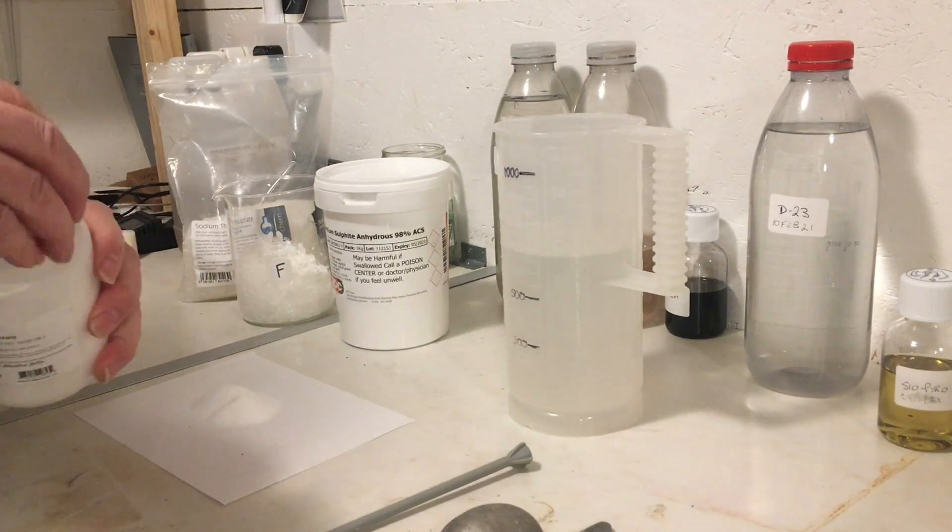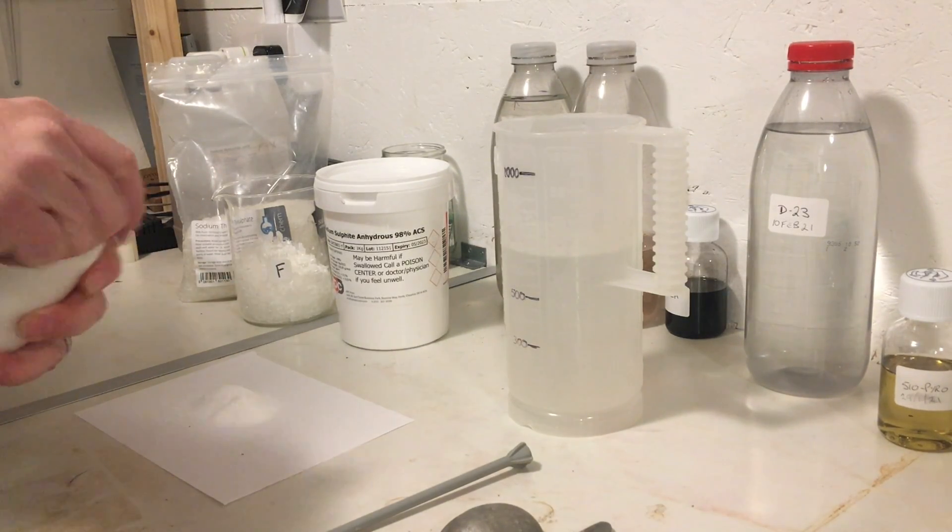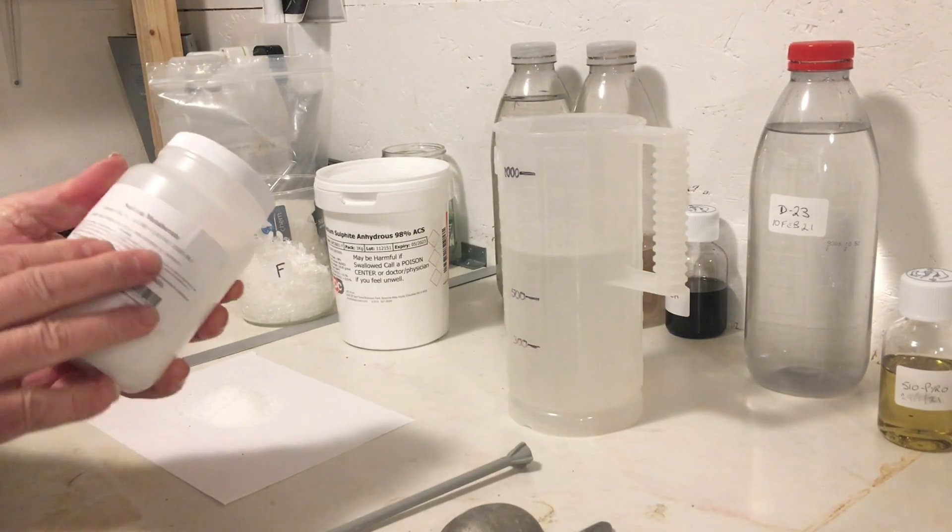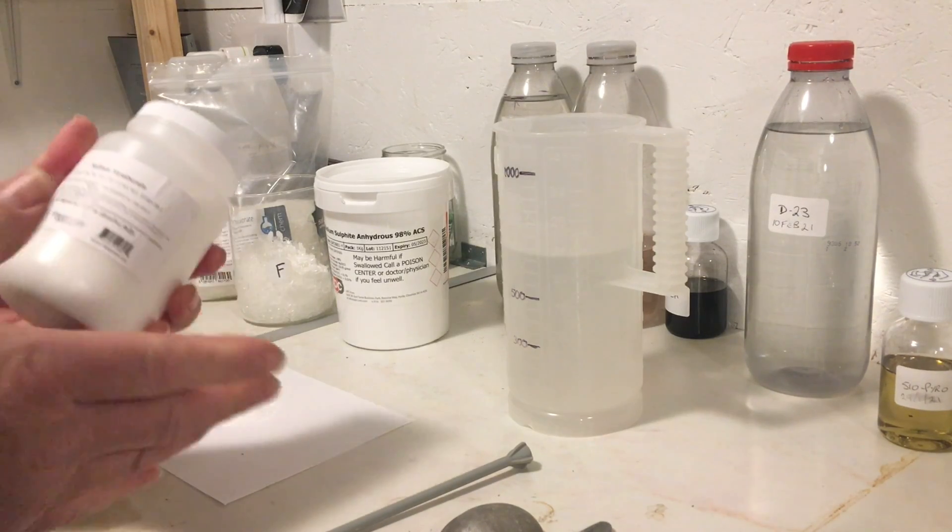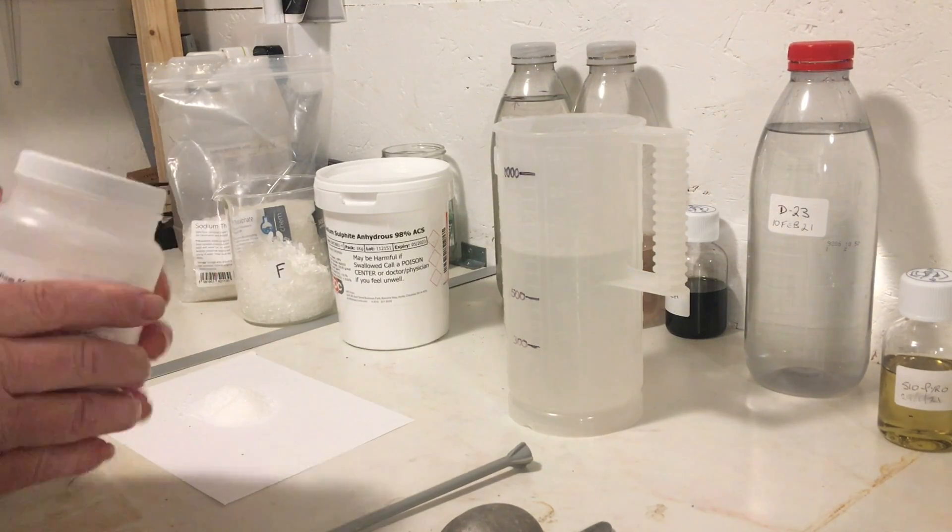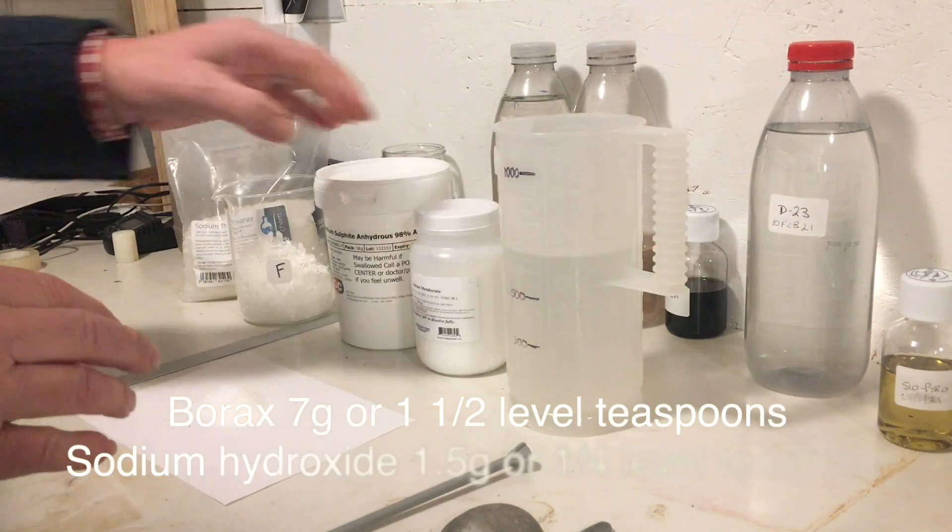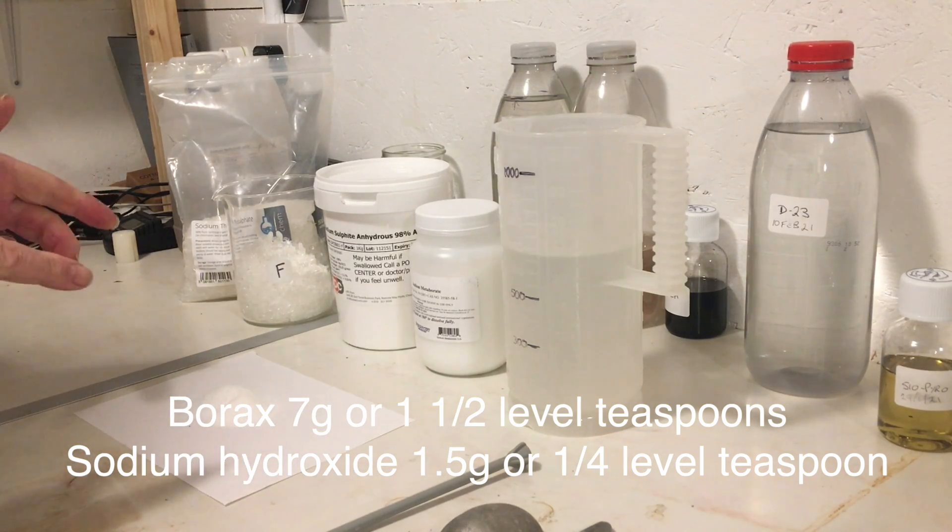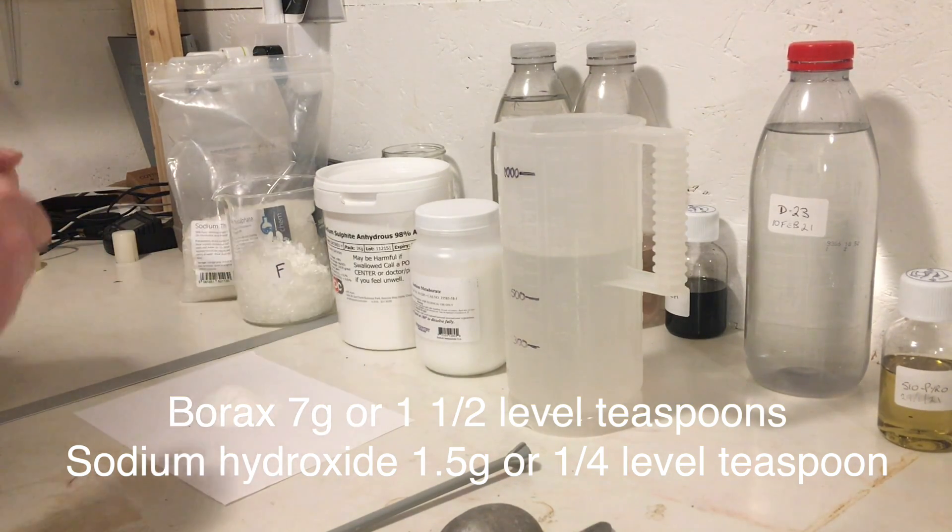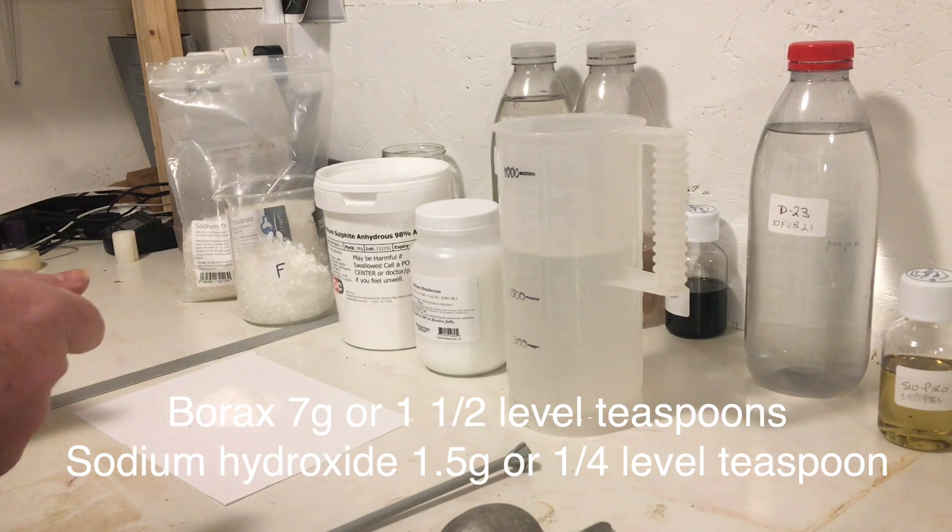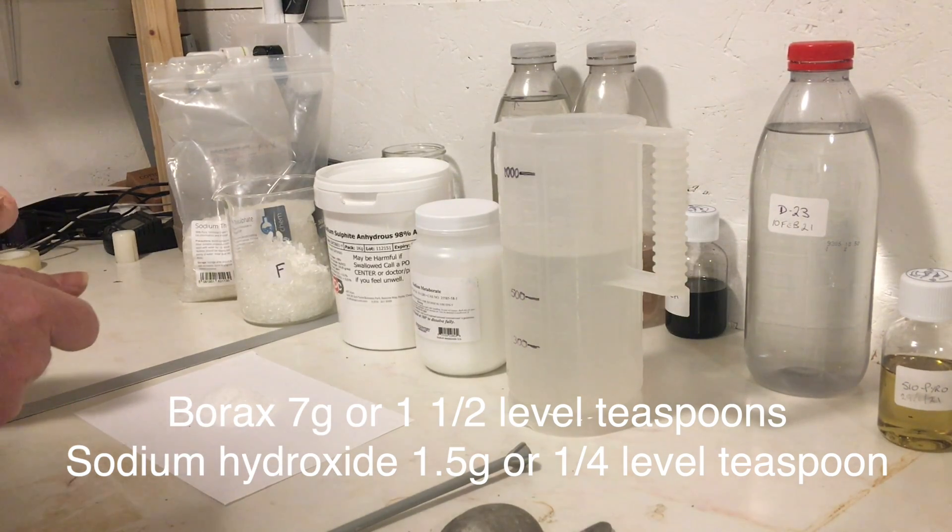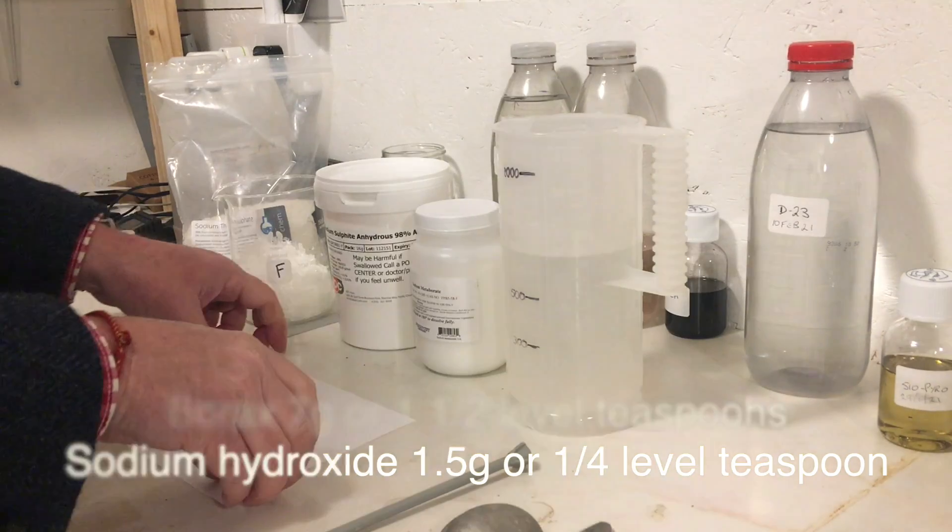Now, what if you're outside the US and you can't get hold of sodium metaborate? At least in UK, I can't get hold of this and I've looked around many sites in Europe as well and they don't sell this. Well, it's quite simple. We would add one and a half teaspoons of borax, which is seven grams, and quarter of a teaspoon of sodium hydroxide. That's one and a half grams.